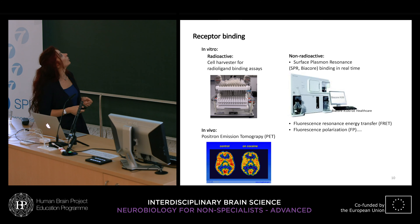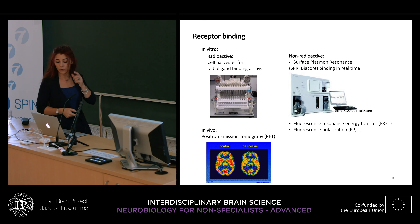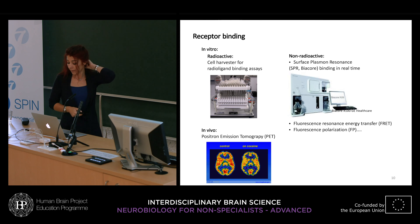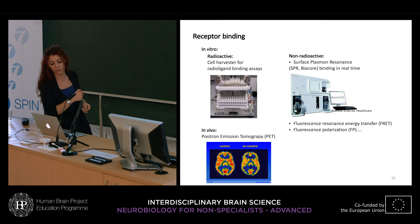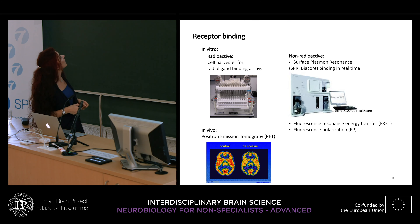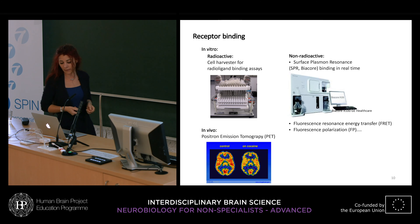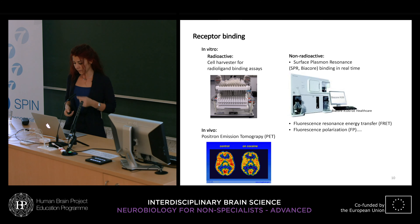One can also see receptor binding in vivo — for example, by positron emission tomography (PET), where red areas show glucose metabolism related to brain activity.